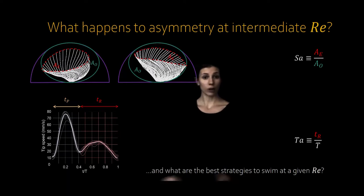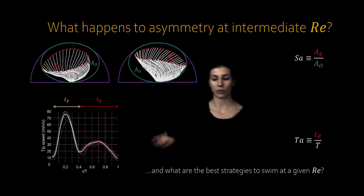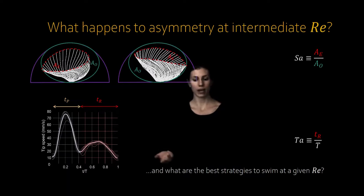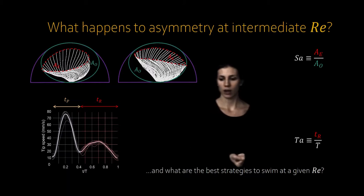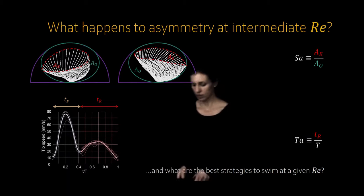So keep these parameters in the back pocket. We're going to come back to them and use them a lot. What we're motivated by is this question of what happens to SA and TA as the Reynolds number changes both in behaving animals and from a theoretical perspective. How do these parameters change or how should they change as we move from lower to higher Reynolds numbers?